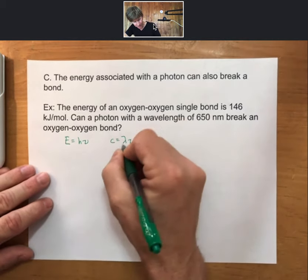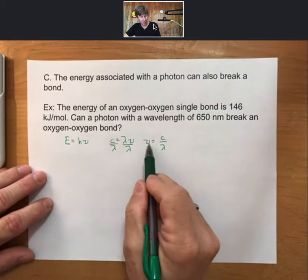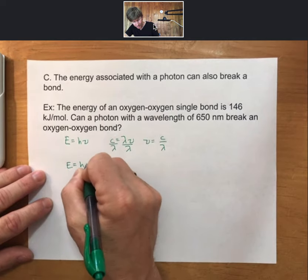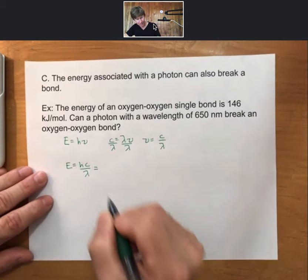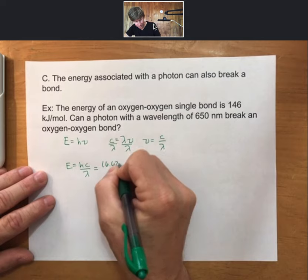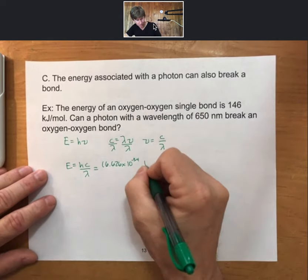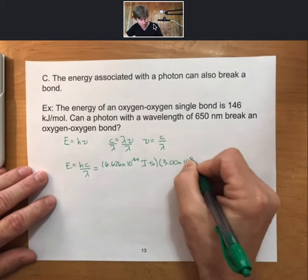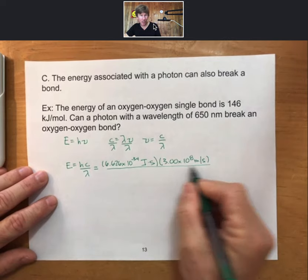To get an equation for frequency here, and then plug in for frequency in the energy equation to get a new equation, which says energy equals Planck's constant H times the speed of light divided by wavelength. And then plug in. Planck's constant, 6.626 times 10 to the minus 34th joule seconds. Speed of light, 3.00 times 10 to the eighth meters per second.